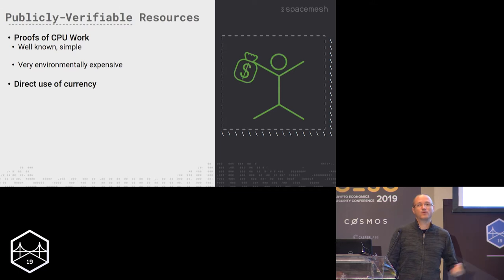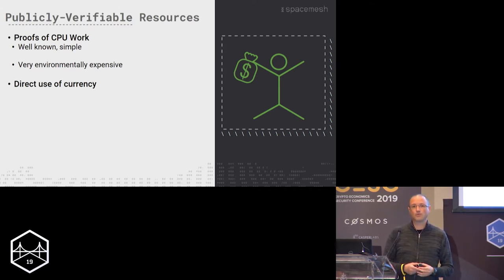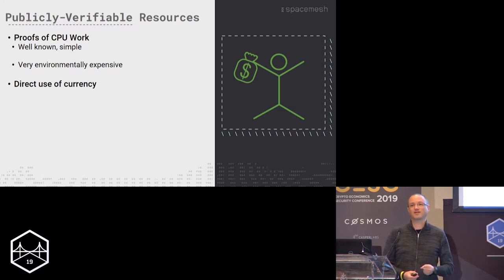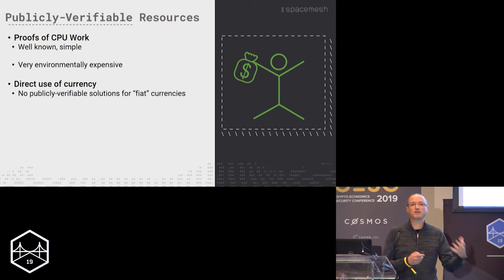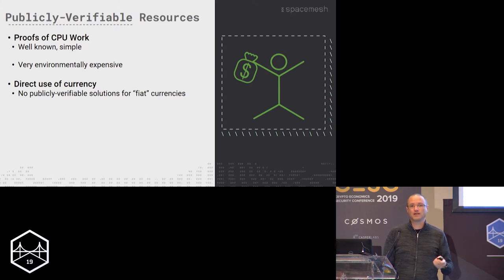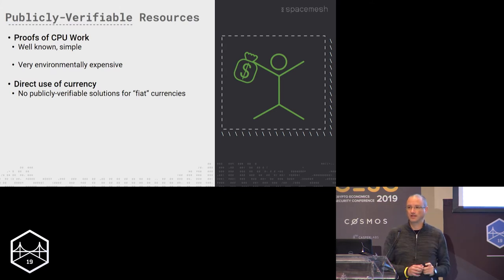Another idea is that we have another limited resource which is money. The whole point of money is it's hard to get. We're trying to build a consensus protocol — let's just use money directly. Unfortunately, for regular currencies like dollars, we don't have a good way to do publicly verifiable resource expenditure, at least not if we don't want to trust a specific government or some centralized organization.